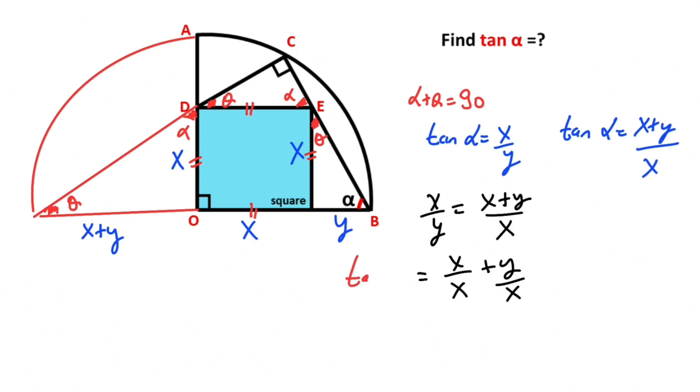So tangent alpha: x over x is 1, and y over x equals 1 over tangent alpha. After that, if we equalize numerators and denominators...